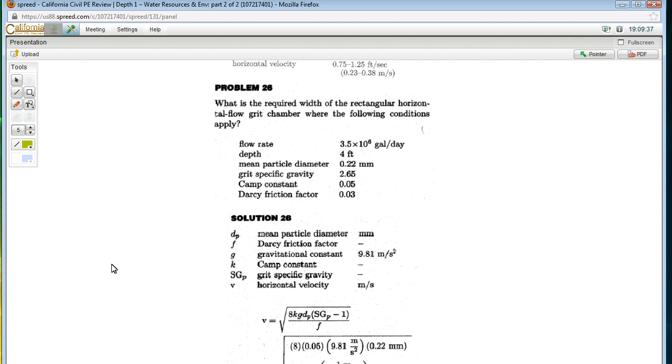Okay, so this is a problem about grit chambers that are part of preliminary treatment in a central treatment plant designed to handle domestic pollutants. So, what is the required width of the rectangular horizontal flow grit chamber where the following conditions apply?